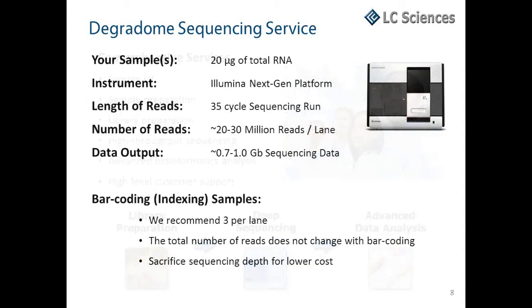Our degradome sequencing services make use of the Illumina next-gen sequencing platform. We ask that you send 20 micrograms of total RNA for each sample. A typical run is a 35-cycle single-end sequencing run, which generates 20 to 30 million reads per lane — about one gigabase of sequencing data. We can save costs and increase throughput by barcoding and running multiple samples in a single lane; however, we recommend no more than three samples per lane, as the total number of reads is split between samples, sacrificing sequencing depth to reduce cost.